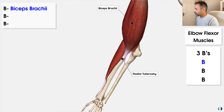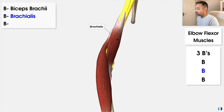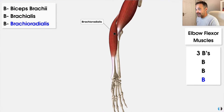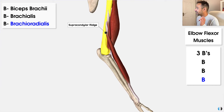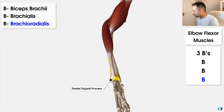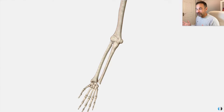The next B is the brachialis muscle, which lies just underneath or deep to the biceps brachii. It originates from the mid-humerus region and inserts onto the ulnar bone. And finally we have brachioradialis, located on the lateral side of the forearm. It originates from the lateral supracondylar ridge — an eminence on the distal lateral humerus — and as the name suggests, brachioradialis inserts into the radius at the radial styloid, right at the distal tip of the radius bone. So there you go — the three B's of elbow flexion: biceps brachii, brachialis, and brachioradialis.